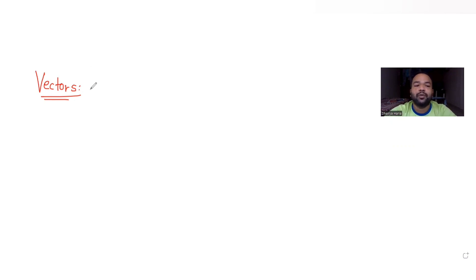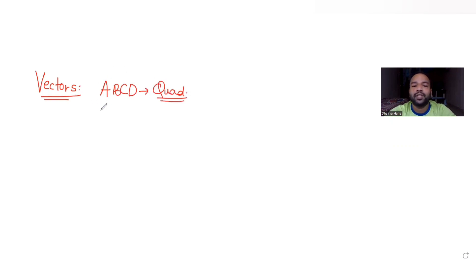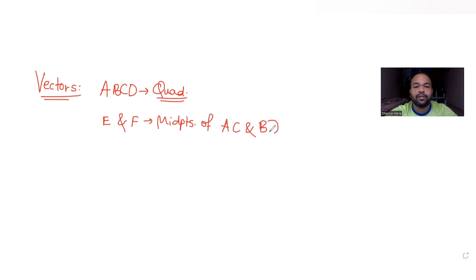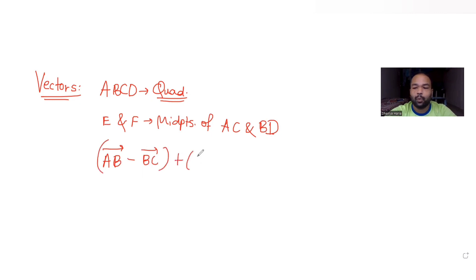The question tells us that ABCD is a quadrilateral — a quadrilateral has four sides. E and F are the midpoints of diagonals AC and BD respectively. So E is the midpoint of AC and F is the midpoint of BD. Further, we are given the vector form: vector AB minus vector BC plus vector AD minus vector DC equals K times vector FE.